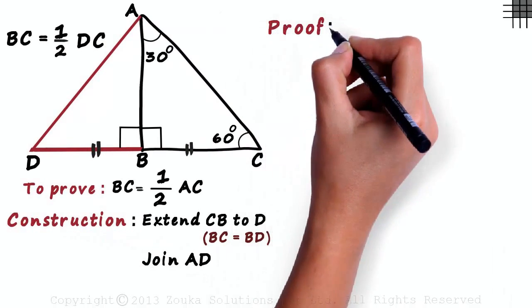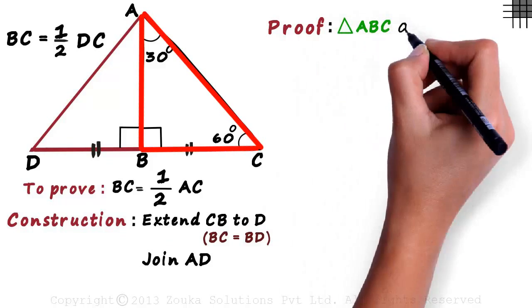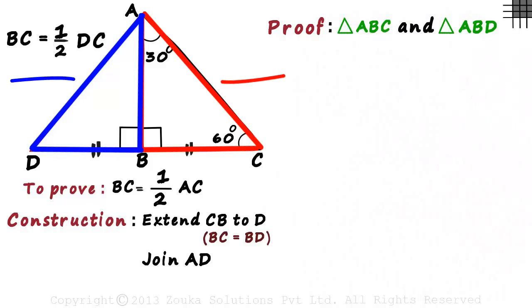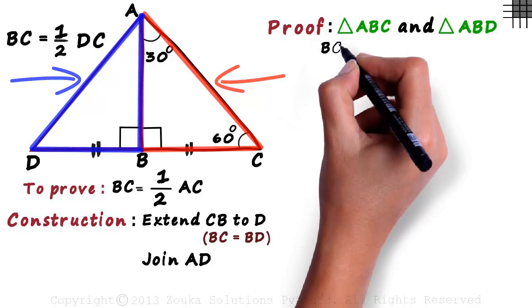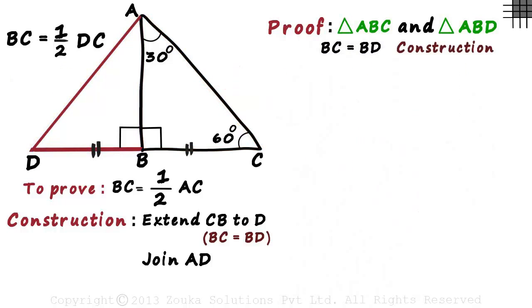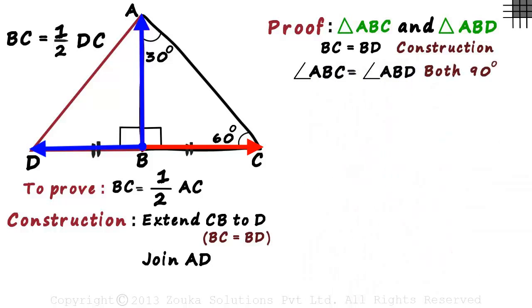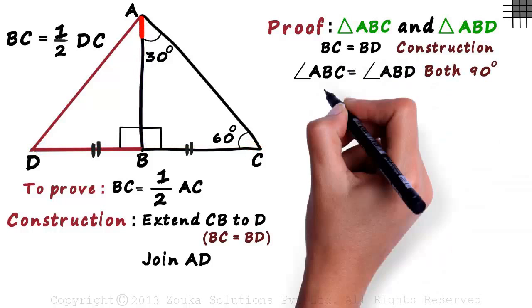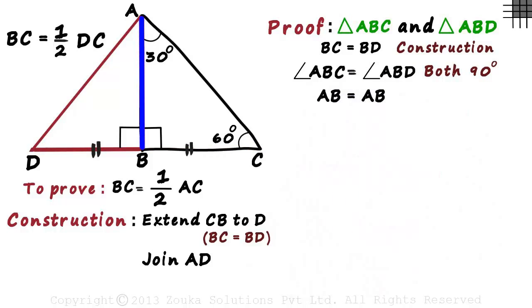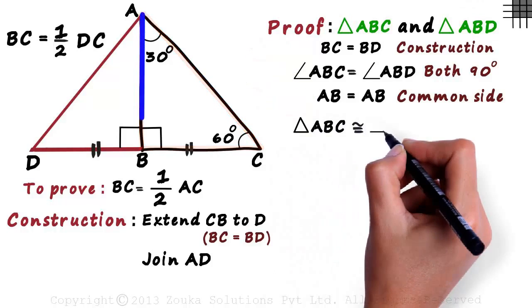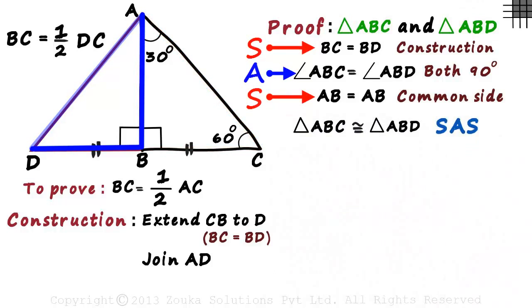In our proof, let's look at triangle ABC and triangle ABD. In these two triangles, BC is equal to BD based on our construction. Angle ABC is equal to angle ABD as both equal 90 degrees. And AB is equal to AB because it's the common side to both the triangles. We have a side, angle, and side. Therefore, triangle ABC is congruent to triangle ABD by the SAS congruence condition.